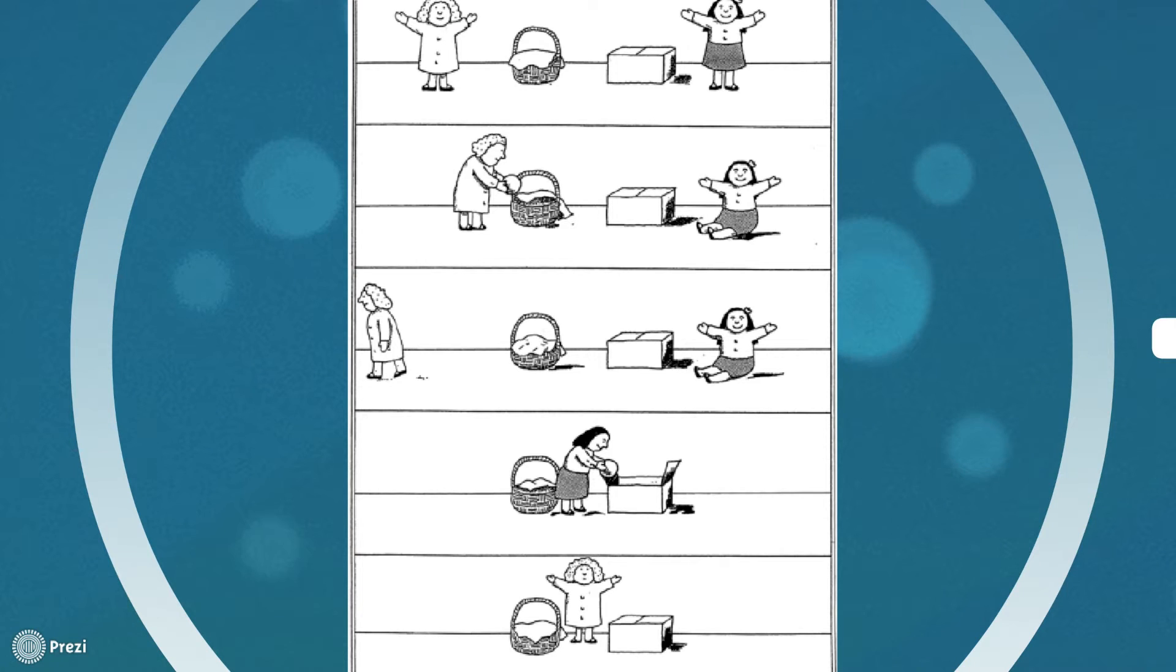In a widely spread study, Samuel Baron Cohen and his colleagues used this test with both autistic and unautistic children. In this study, autistic and unautistic children watch an interaction between two dolls, Sally and Ann. Sally has a basket and Ann has a box. Sally puts the marble in the basket and leaves the room. Ann takes the marble from the basket and puts it into the box. Sally returns and looks for the marble.